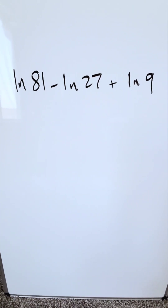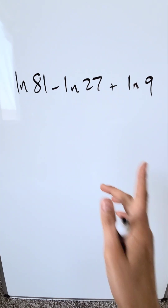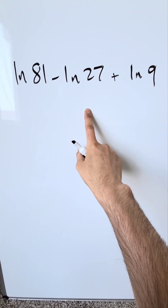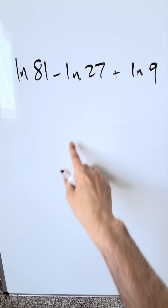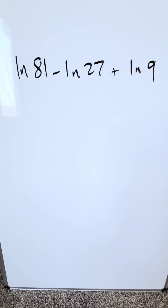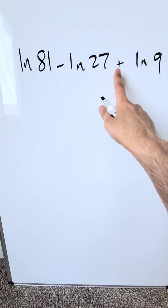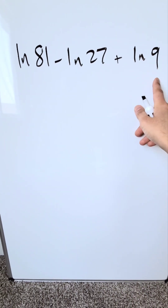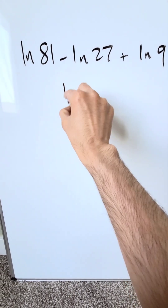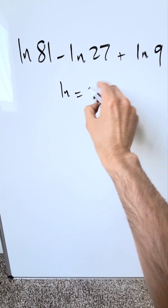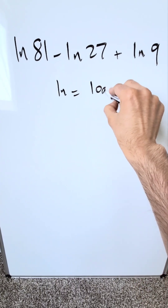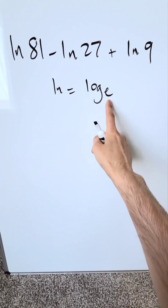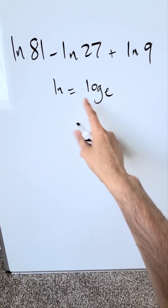Look here at this logarithmic expression. We will simplify this to the maximum extent possible: natural log 81 minus natural log 27 plus natural log 9. Always remember, natural log is no different than log base e. All of these logs — independent logs — have a common base e.